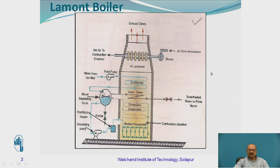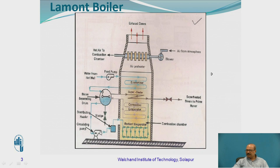Here, both water and steam are available in this drum — we are going to call this the steam separating drum. Whatever hot water is coming in is going to be stored in the steam separating drum. That water is then taken through the circulating pump. This circulating pump is coupled to the turbine so that it utilizes energy from the turbine. Then this pump is going to send the water to the radiant evaporator.